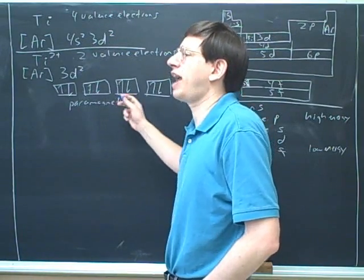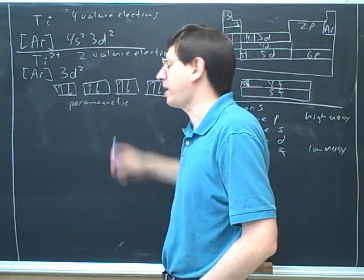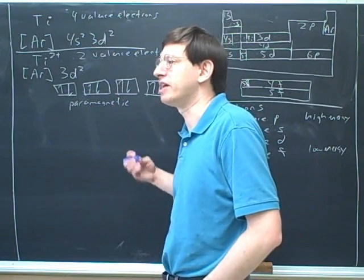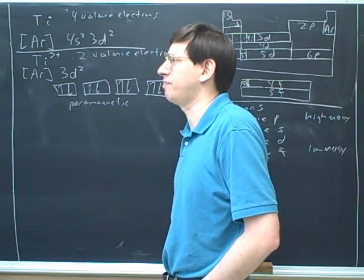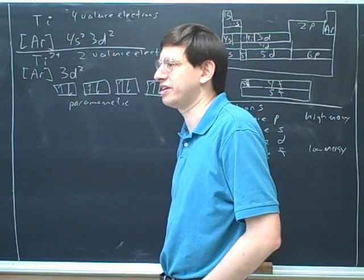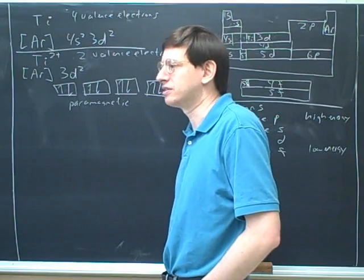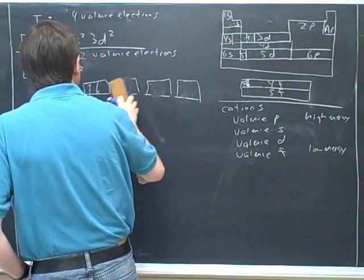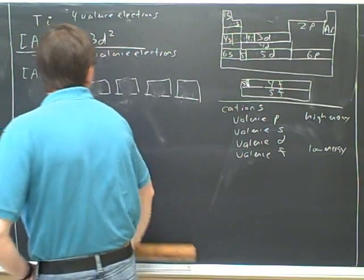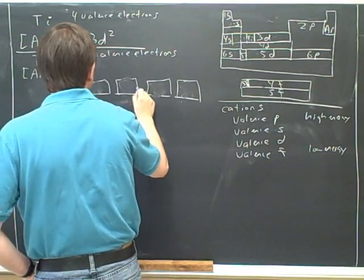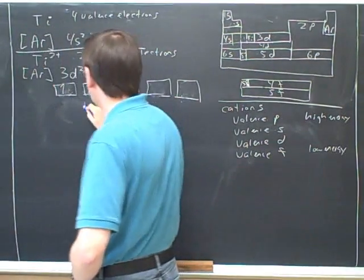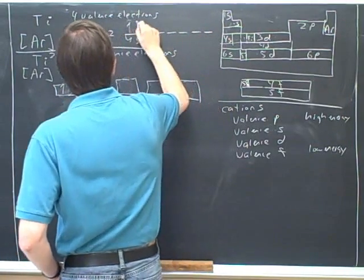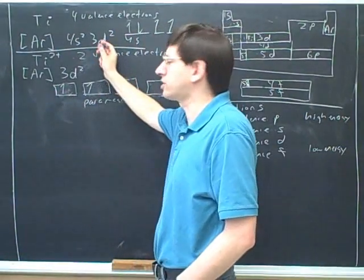By the way, if something is paramagnetic, that means it's attracted weakly into magnetic fields. So that's worth memorizing. Paramagnetic substances are attracted into magnetic fields. And diamagnetic substances are repelled. So that's how you can tell experimentally if something is para or diamagnetic. And then you can test whether that matches the prediction that you would have gotten from your electron configuration theory. Paramagnetic substances are weakly attracted by magnetic fields. And diamagnetic substances are weakly repelled.